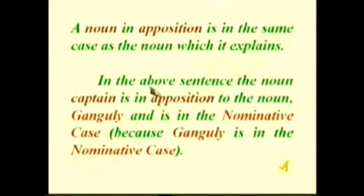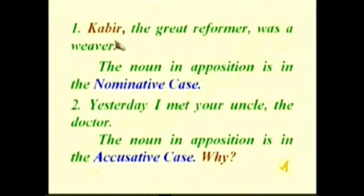A noun in apposition is in the same case as the noun it explains — nominative case means nominative, accusative means accusative. In the sentence about Ganguly, 'captain' is in apposition and in the nominative case because Ganguly is in the nominative case. Another example: 'Kabir, the great reformer, was a weaver' — 'the great reformer' is in apposition to Kabir, so it is also in the nominative case.